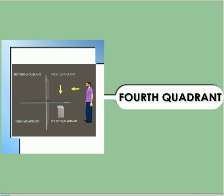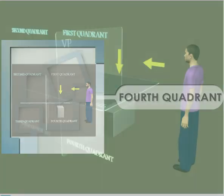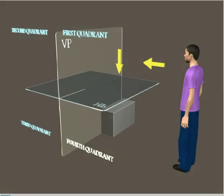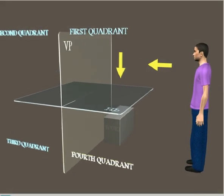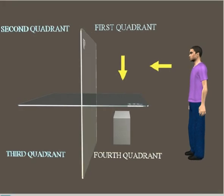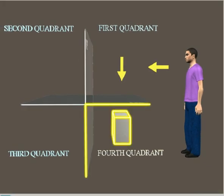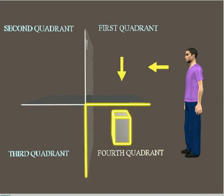We will see about how an object is placed in the fourth quadrant. In this quadrant, the object is placed below the horizontal plane and in front of the vertical plane.